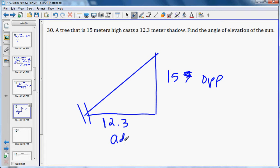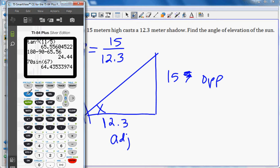So to solve for that, anytime we're trying to solve for the angle, we need to use arctangent or inverse tangent. So we'll do second tangent, arctangent, 15 over 12.3. That tells us that the angle of elevation is 50.648 degrees.